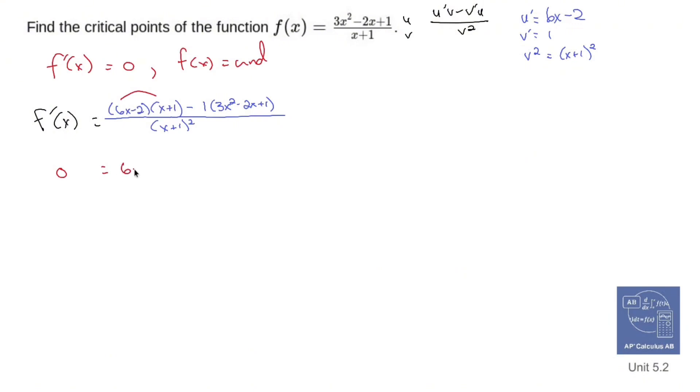We've got FOIL. So 6x squared plus 6x, negative 2x, negative 2, distribute the negative 1, minus 3x squared, positive 2x, negative 1. And that's going to be all over x plus 1 squared. Now let's multiply both sides by x plus 1 squared. And you'll realize that just makes it go away. That's kind of the point. Because we don't need a denominator if we're finding zeros.